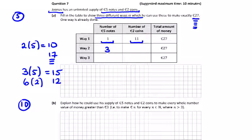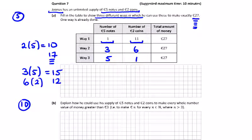Three €5 notes (€15) and six €2 coins (€12) makes €27. Five €5 notes would be €25, leaving one €2 coin — that also works. So our instinct is correct: an even number of €5 notes won't work for €27.